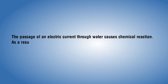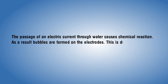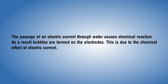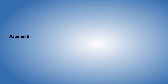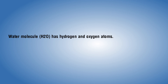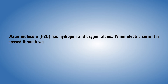As a result, bubbles are formed on the electrodes. This is due to the chemical effect of electric current. The water molecule H₂O has hydrogen and oxygen atoms. When electric current is passed through water, oxygen bubbles are released at the positive electrode.